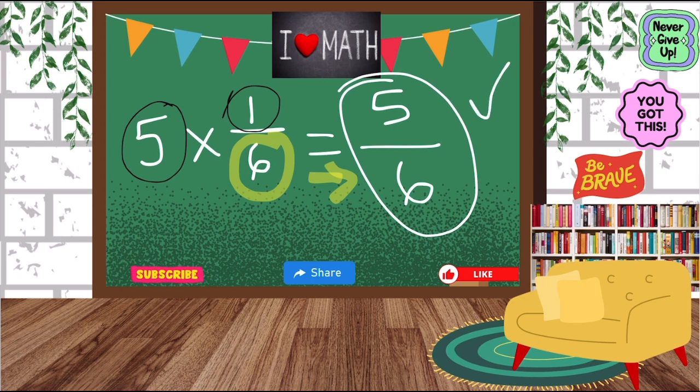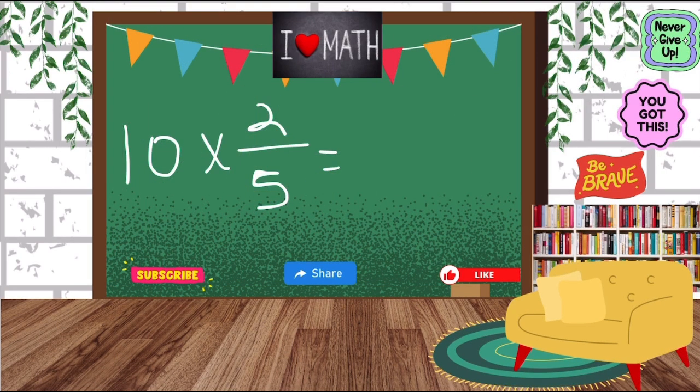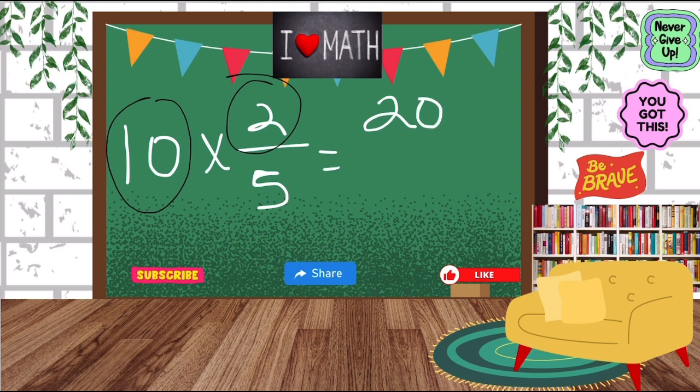So now let's do another one, okay? So now we have 10 times 2/5. Remember, we take our whole number and we multiply it by the numerator. 10 times 2 is 20 and our denominator is 5. It stays the same. We just bring it on over. So we have 20/5.